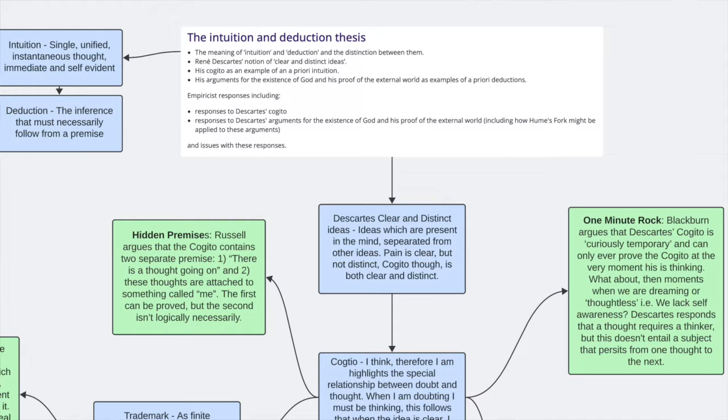And so the second criticism that I really like is from Blackburn. He argues that the Cogito is curiously temporary and can only ever prove the Cogito at the very moment that he is thinking. So when I'm thinking, I think therefore I exist. Cogito ergo sum. When I'm thinking that, yeah,